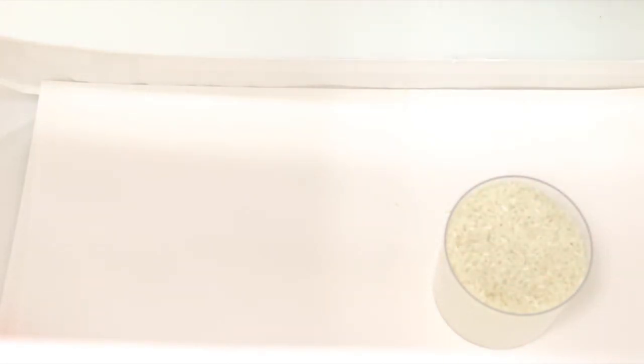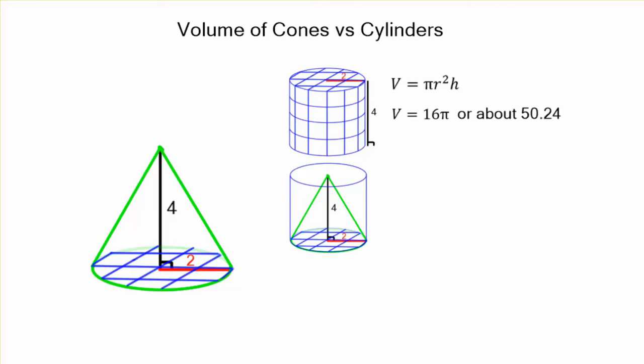So let's get back to our formula. It's going to be one third. Volume is equal to pi r squared times height divided by three. You're usually going to see it as one third pi r squared times height.